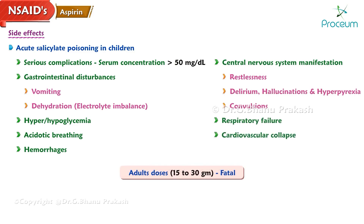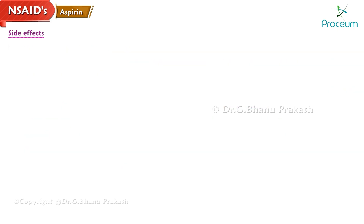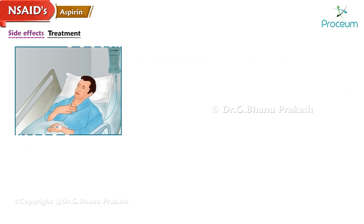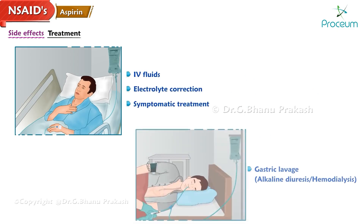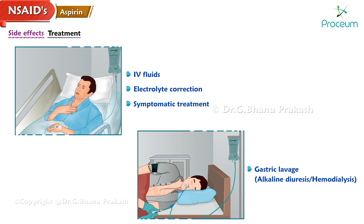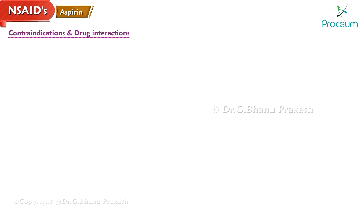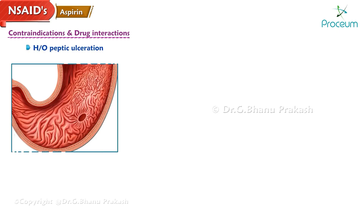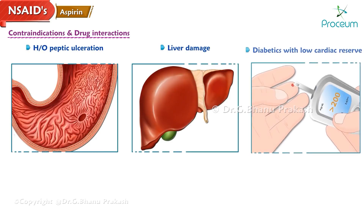In adults, doses of 15 to 30 grams are considered fatal. Treatment is conservative with intravenous fluids, electrolyte correction, and symptomatic treatment. Gastric lavage, alkaline diuresis, or hemodialysis can be initiated.